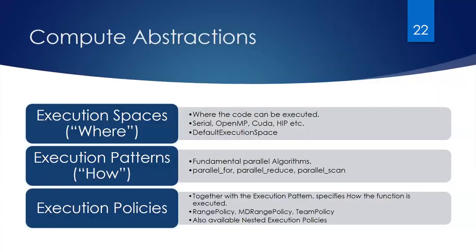COCOS also has compute abstractions. The first is execution space, which specifies where the code executes: serial, OpenMP, CUDA, or HIP. Similar to the default memory space, there is a default execution space configurable at compile time. Then there are execution patterns — fundamental parallel data algorithms. For example, parallel_for executes user code in parallel one step at a time, parallel_reduce performs a reduction in parallel, and parallel_scan generates a prefix sum operation in parallel.